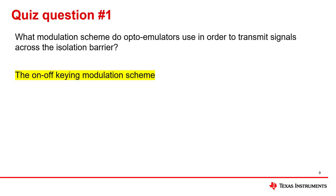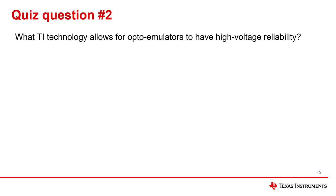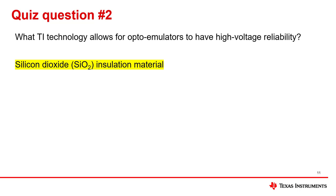The correct answer is the on-off keying modulation scheme, or OOK for short. Question number two: what TI technology allows for optoemulators to have high-voltage reliability? Please pause to take a few minutes to answer the question. The correct answer is silicon dioxide, or SiO2, insulation material.